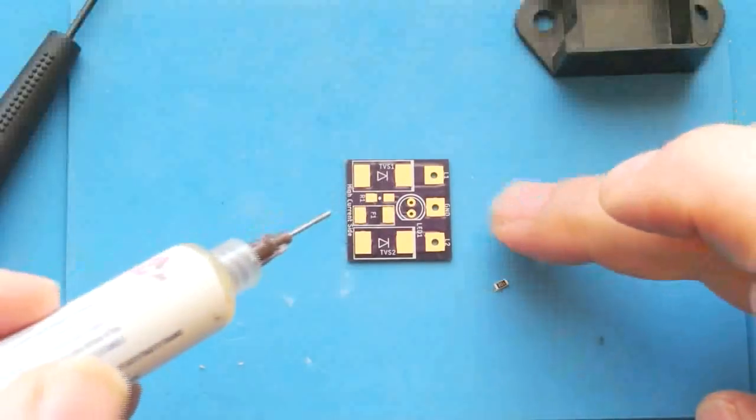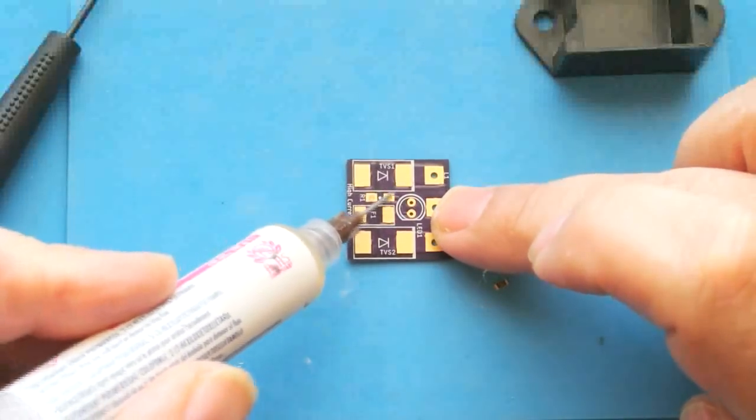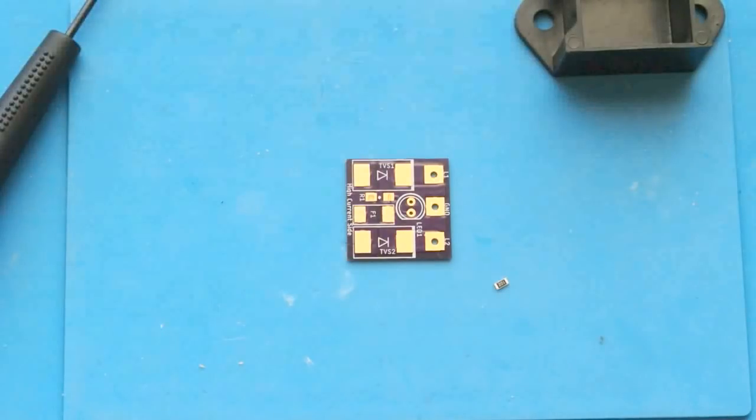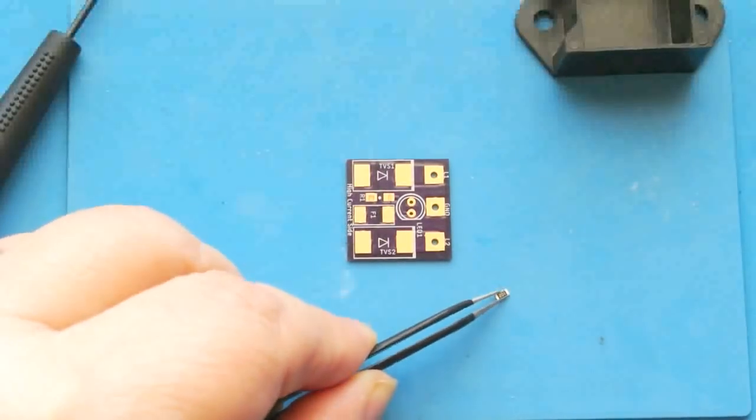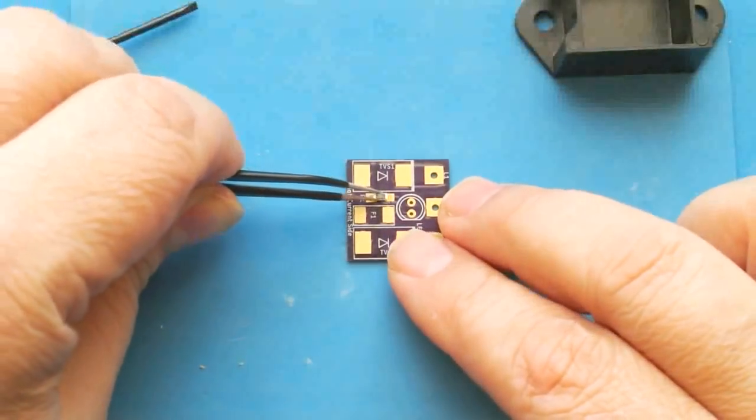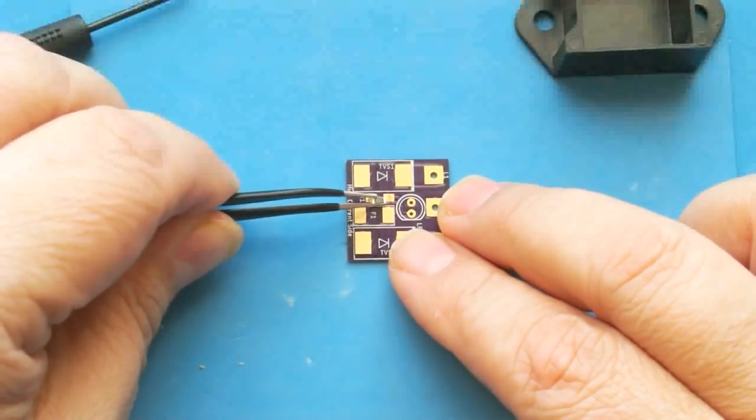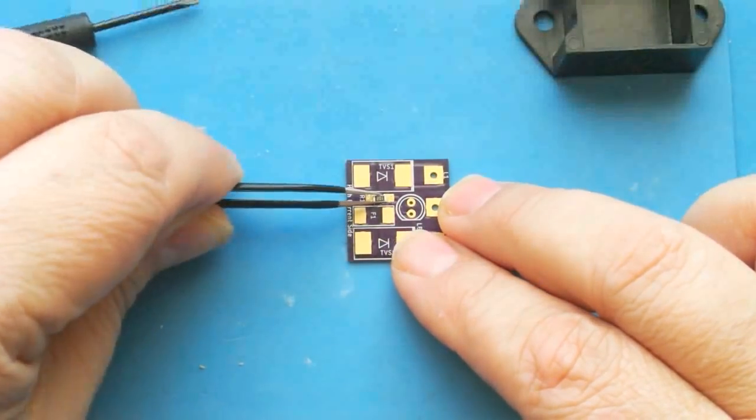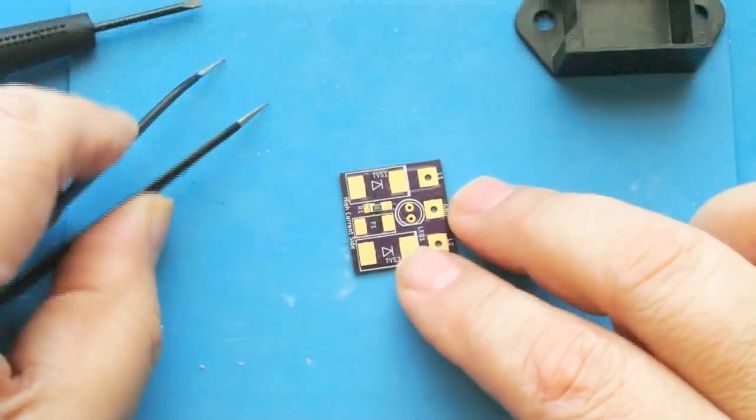When you do SMD, it's always easiest just to use a little bit of flux because it makes the parts solder a little better. These are 1206 resistors which are about the largest you can get, and I did that purposely because I want to keep it easy for novices.